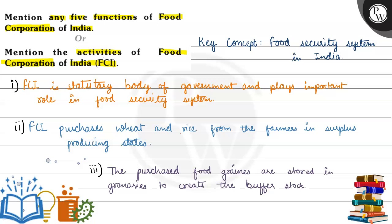Let's see the key concept. The key concept is food security system in India. India's food security system ensures the role of Food Corporation of India and FCI. FCI is a statutory body of the government and plays an important role in the food security system.